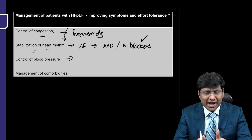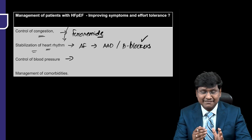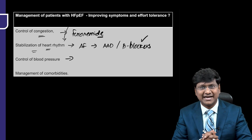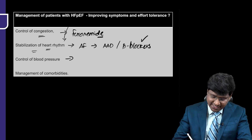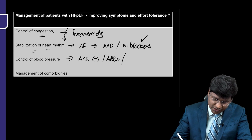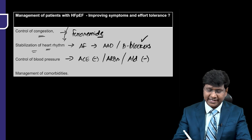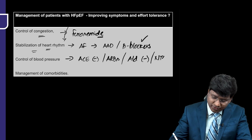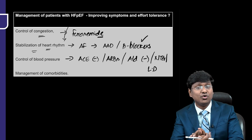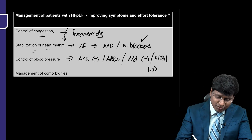Controlling blood pressure is very important because if the blood pressure is on the higher side, that will increase the afterload on the heart. You can achieve blood pressure control by giving ACE inhibitors, angiotensin receptor blockers, aldosterone antagonists, nitroglycerin, or even loop diuretics.